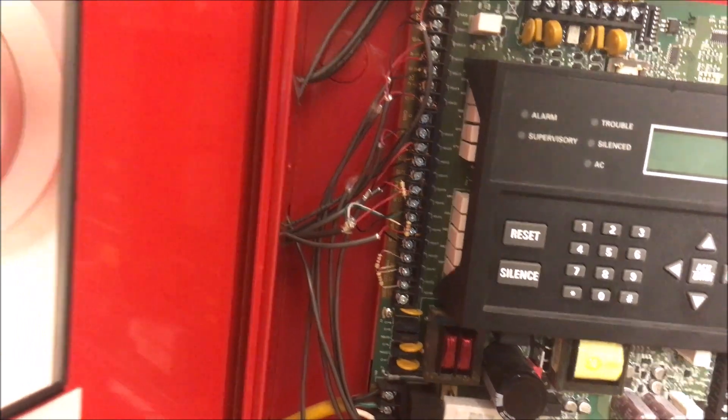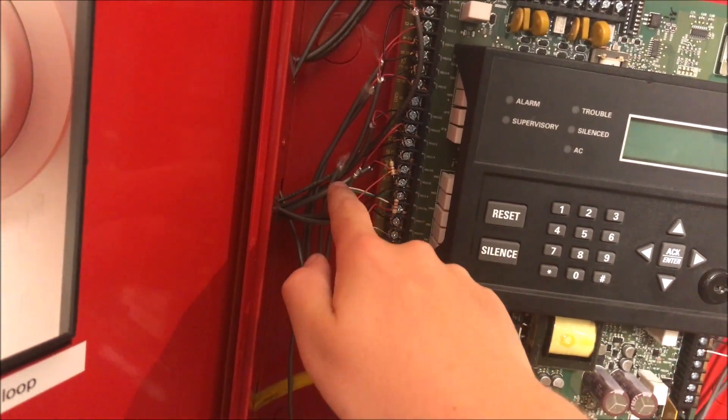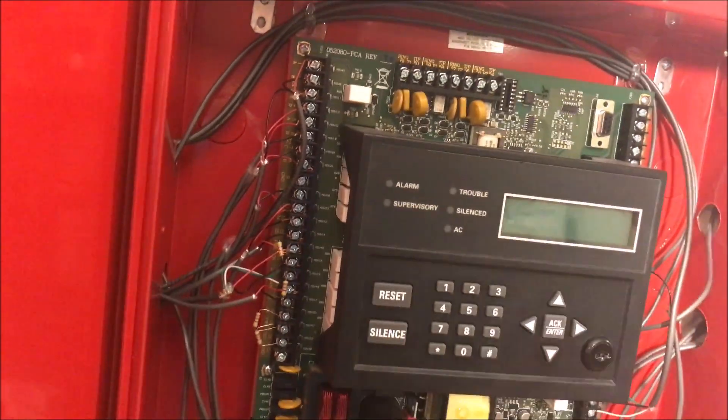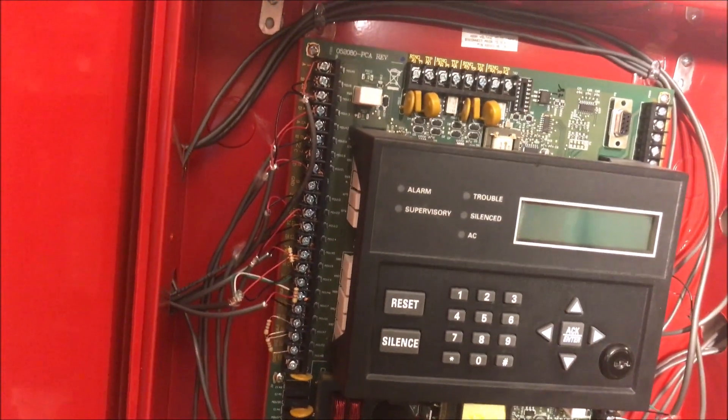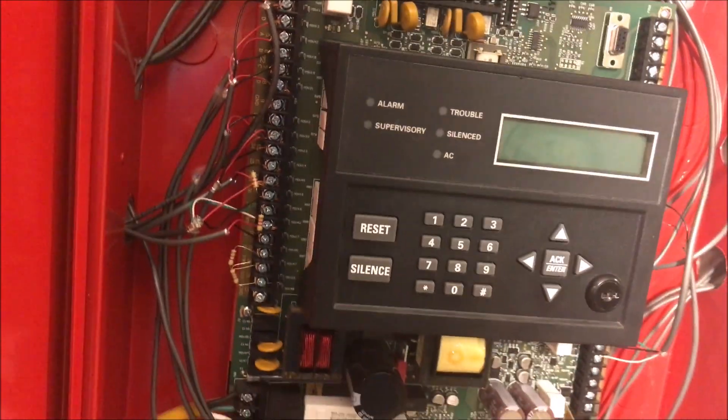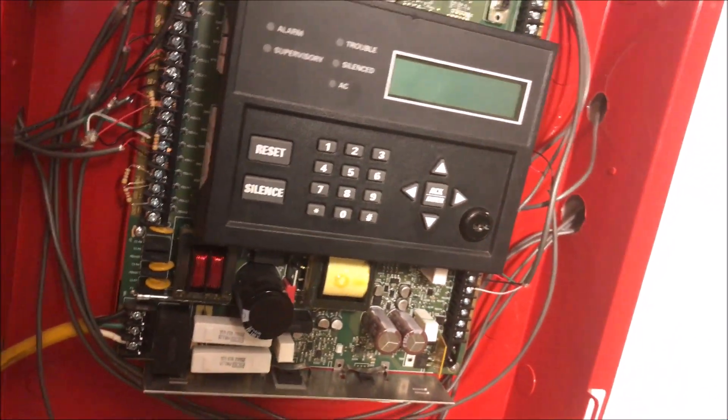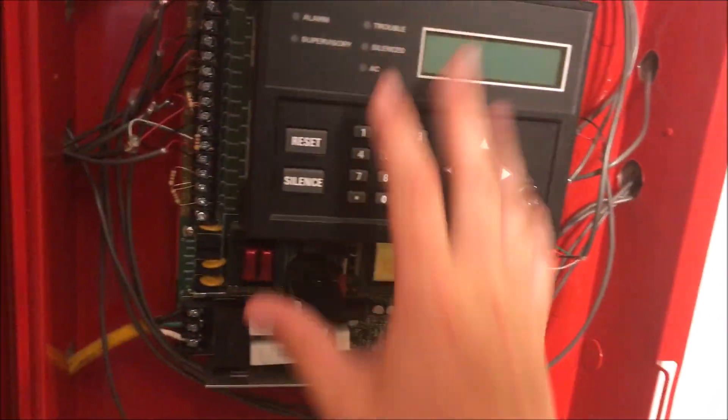I have that wired in as a supervisory zone, so that way it's a non-latching supervisory. So when I'm done doing a NAC test, I can just turn it back and it resets the panel, or it doesn't reset the panel but it just resets the zone on its own, and you don't have to fiddle with the panel at all. So that is coded as a non-latching supervisory.